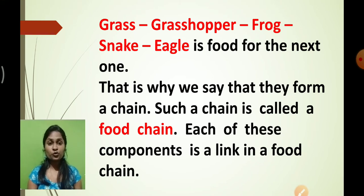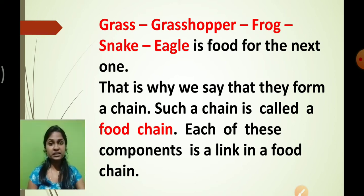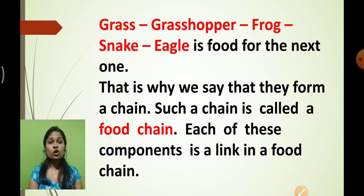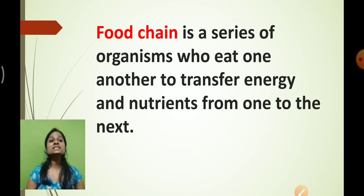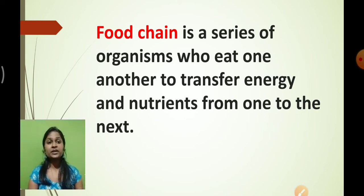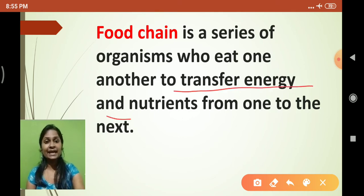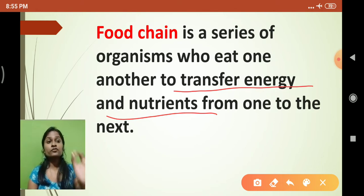So in this picture we have: grass, grasshopper, frog, snake, eagle — each is food for the next one, forming one chain we call a food chain. The definition of food chain: a food chain is a series of organisms who eat one another to transfer energy and nutrients from one to the next.